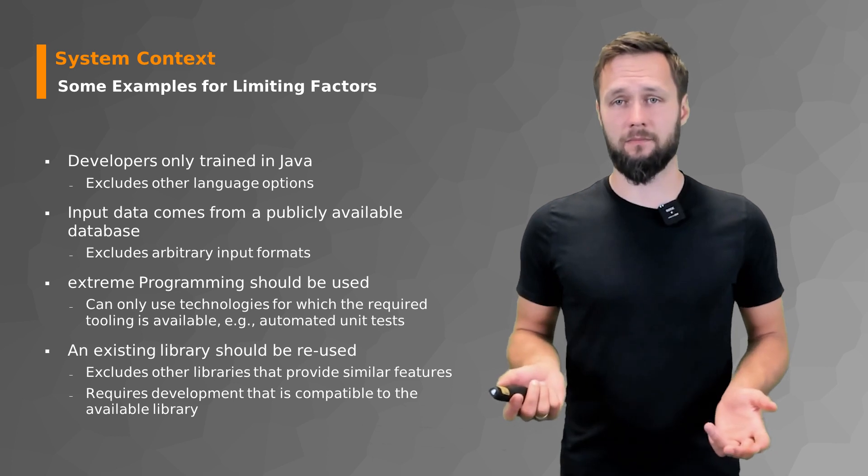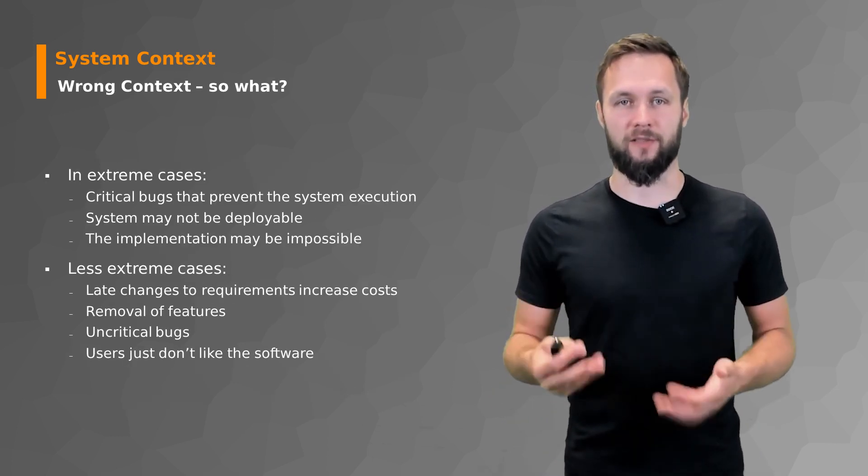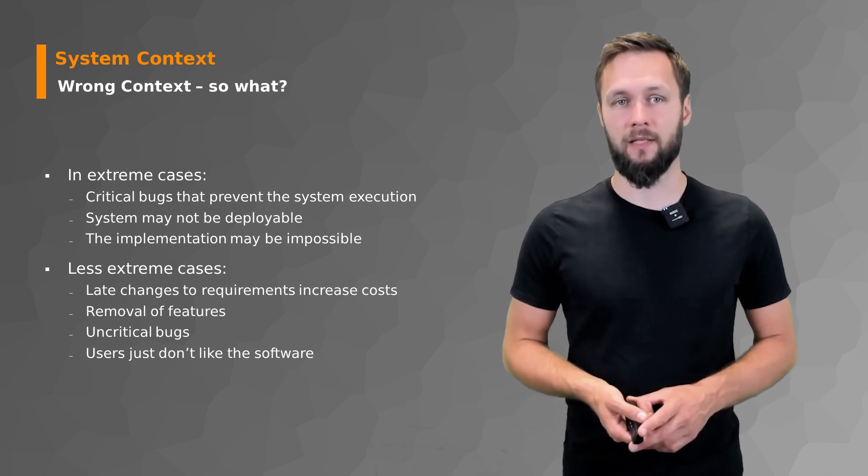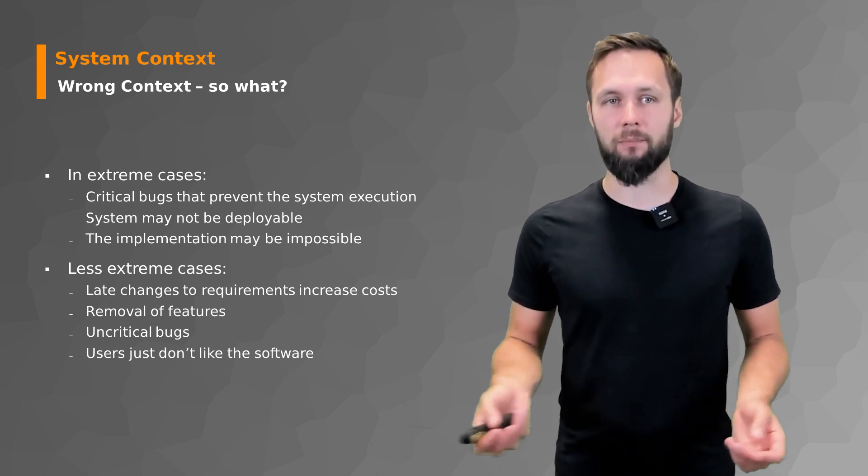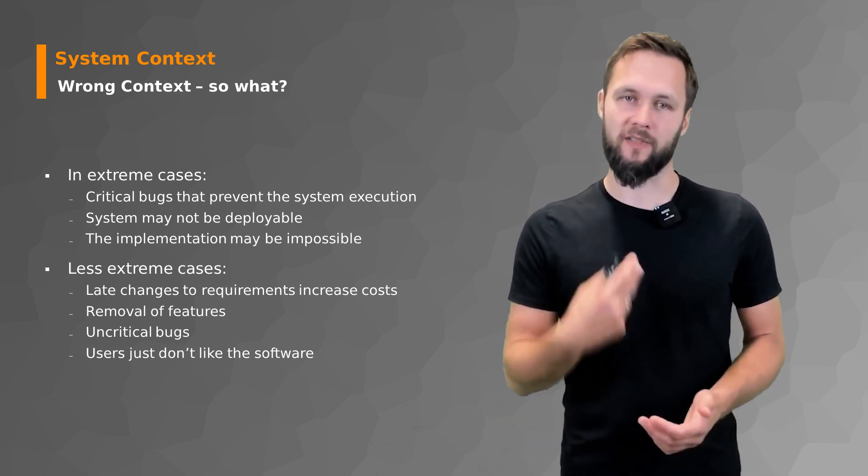What happens if you have a wrong context? In extreme cases your project just doesn't work at all. Critical bugs that prevent system execution could happen. The system may not be deployable. The implementation may be impossible but those are among the extreme cases.